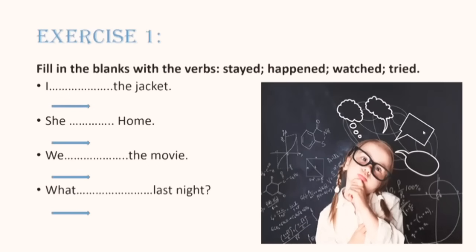So your first exercise, look at the question that you have. Fill in the blanks with the verbs: stayed, happened, watched, tried. So you have four verbs, four sentences. What do you think for the first sentence? I and you have the jacket. Can we say I stayed the jacket? Of course not. What do we say? Which verb are you going to use? Let's see if you get the correct one. Good job. I tried the jacket. We try clothes that we want to wear.